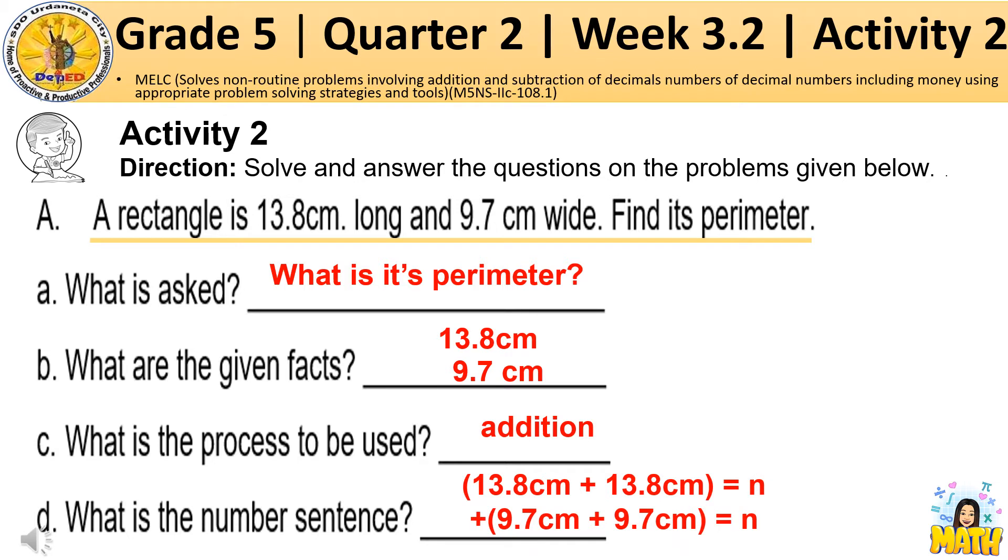So, we should find the sum of 13 and 8 tenths centimeters plus 13 and 8 tenths centimeters is equal to N and 9 and 7 tenths centimeters plus 9 and 7 tenths centimeters is equal to N.